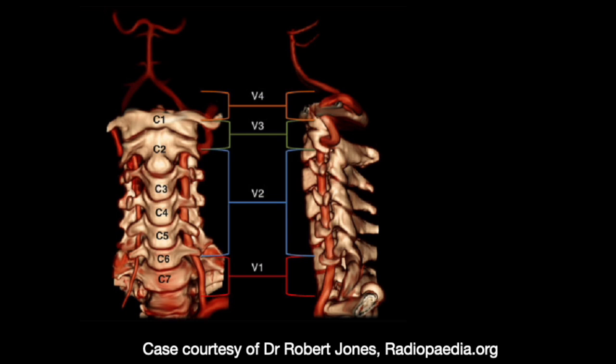V2 is the foraminal segment. V3, also known as the atlantic, extradural, or extraspinal segment, starts from C2, where the artery loops and turns laterally to ascend into the transverse foramen and continues through C1 to pierce the dura. V4, also known as the intradural or intracranial segment, is the vertebral artery from the dura at the lateral edge of the posterior atlanto-occipital membrane to the confluence at the medulla to form the basilar artery.